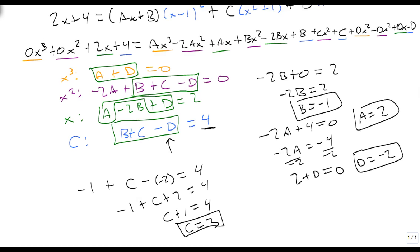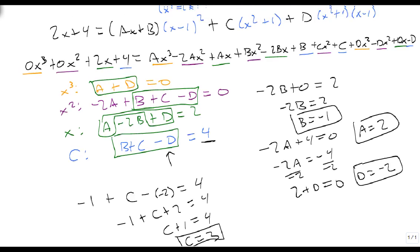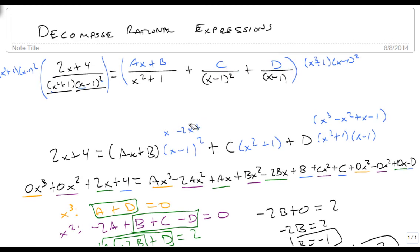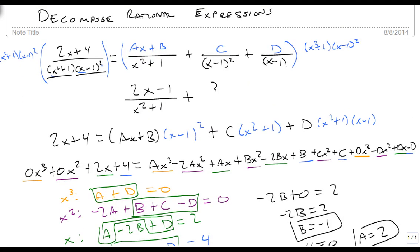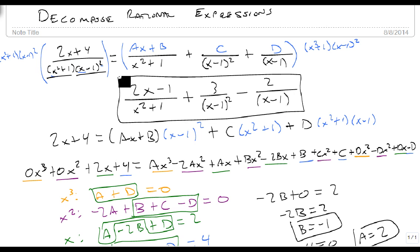But I'm going to take advantage of what I have to make this one work. Well, now that I know that a is 2, b is minus 1, c is 3, and d is minus 2, I can come back up, and I can rewrite this as 2x minus 1 over x squared plus 1, plus 3 over x minus 1 quantity squared, minus 2 over x minus 1. And here is my partial fraction decomposition of 2x plus 4 over the quantity x squared plus 1 times the quantity x minus 1 squared.